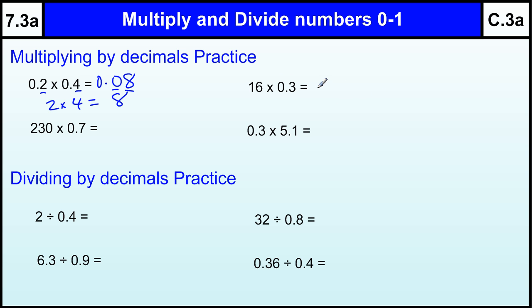16 times 0.3, or 3, 16 times 3. 3 sixes are 18, carry 1, 3 ones are 3 and 1 is 4, so that's going to be 48. But we've got 1 decimal place in the question, so I need to put 1 into my answer, so 4.8.